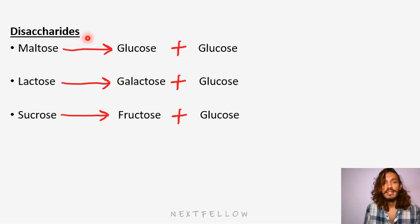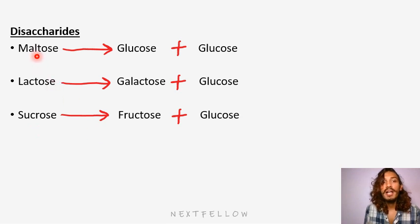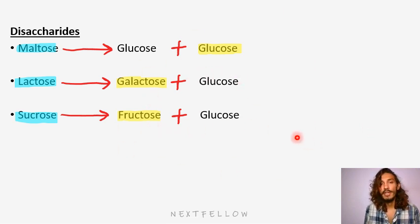Let's take a look at the disaccharides. We've already seen maltose. Then there is lactose and sucrose — these are the major ones. So polysaccharides become eventually maltose, and the other disaccharides that were ingested were lactose and sucrose. Maltose, when broken down, just becomes glucose and glucose. Lactose, if you break it down, becomes galactose and glucose. Sucrose, if you break it down, gives fructose and glucose. This question even comes for biochemistry.